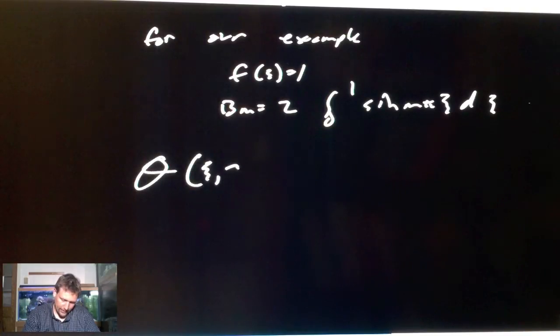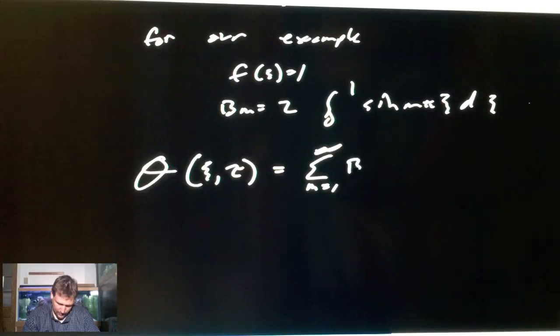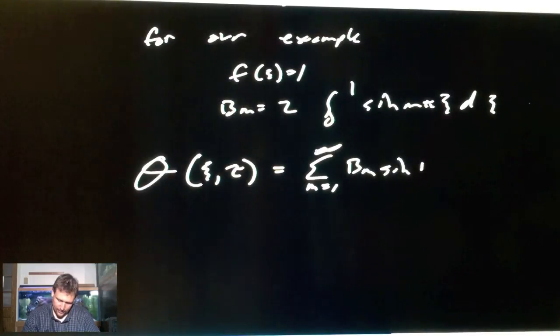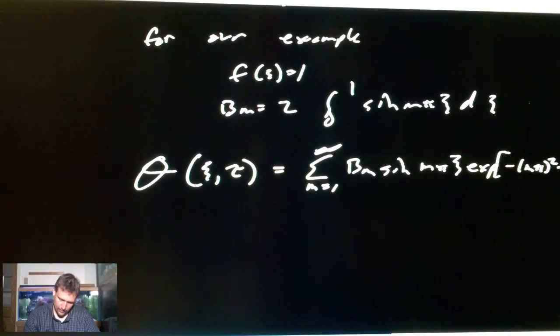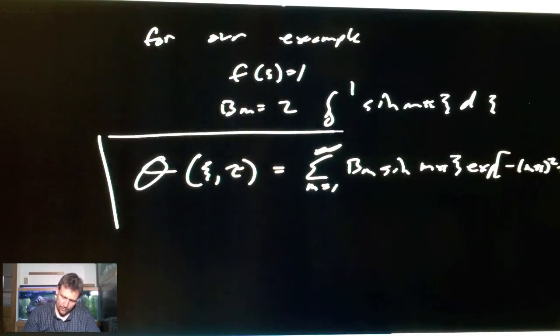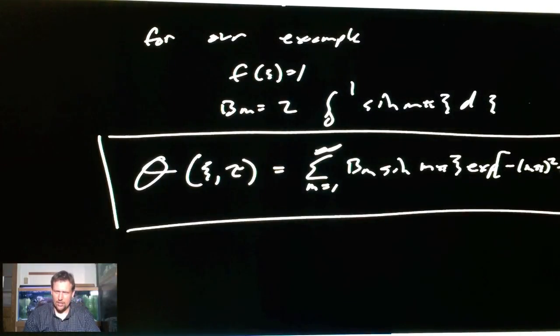And our final solution, in terms of our dimensionless variables for this problem, is theta, function of psi, tau, equals sum m equals 1 to infinity and beyond b m, sine m pi psi, exp minus m pi squared tau. There is our beautiful solution to dynamic heat transfer through a rod. Not Alex Rodriguez, a rod of solid material. Thank you.